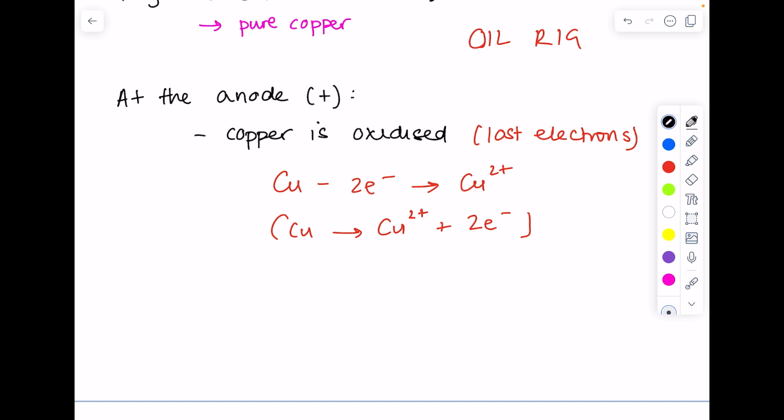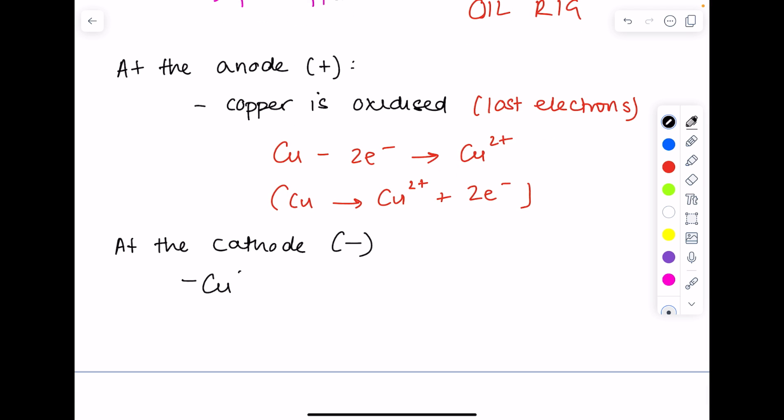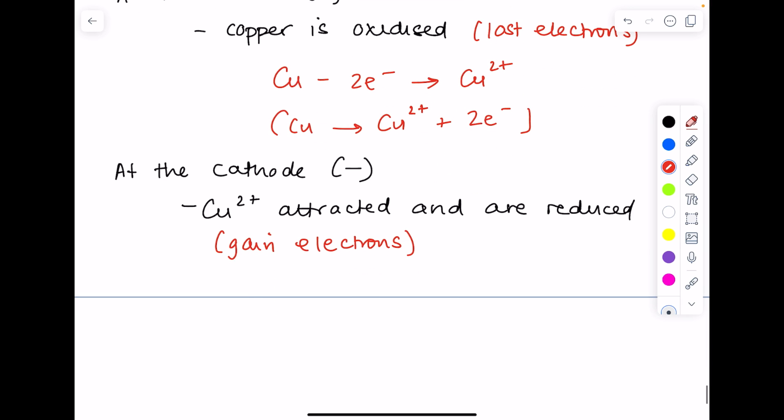What's happening at the cathode, so the negative electrode, those copper ions are attracted and are reduced. According to OIL RIG, reduction is gain of electrons. And to show you that half equation, there is reduction taking place.